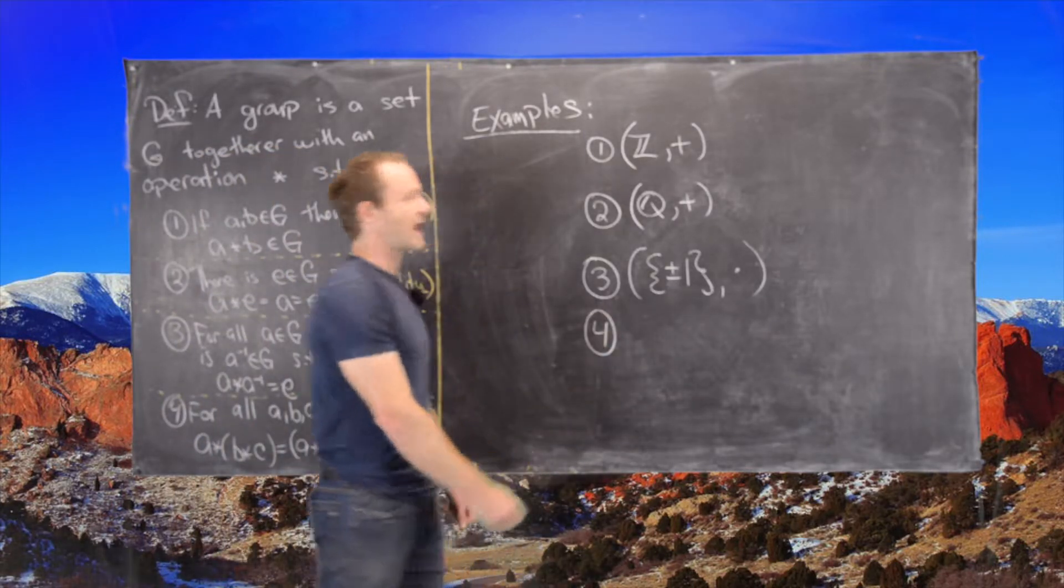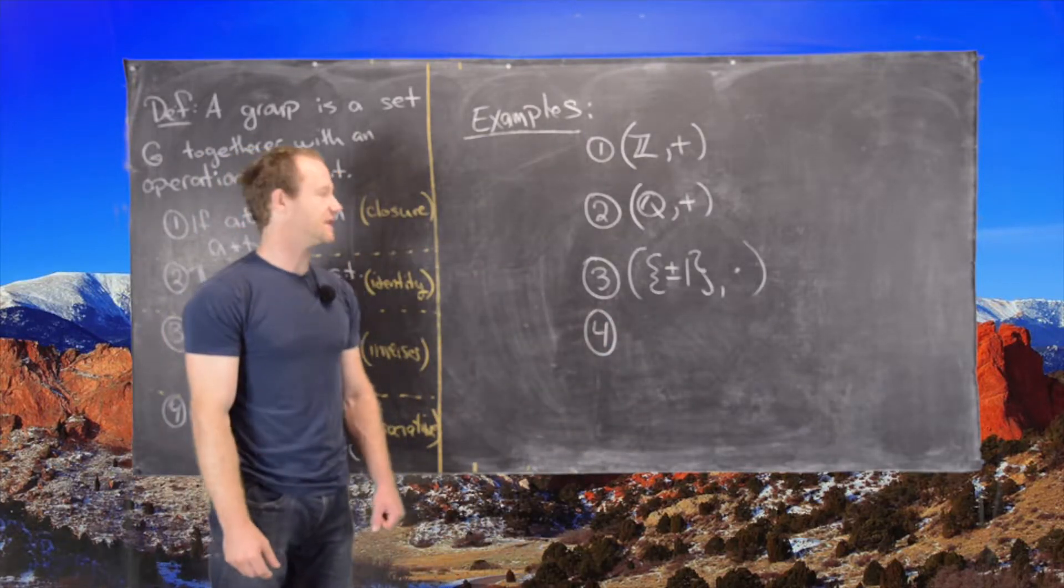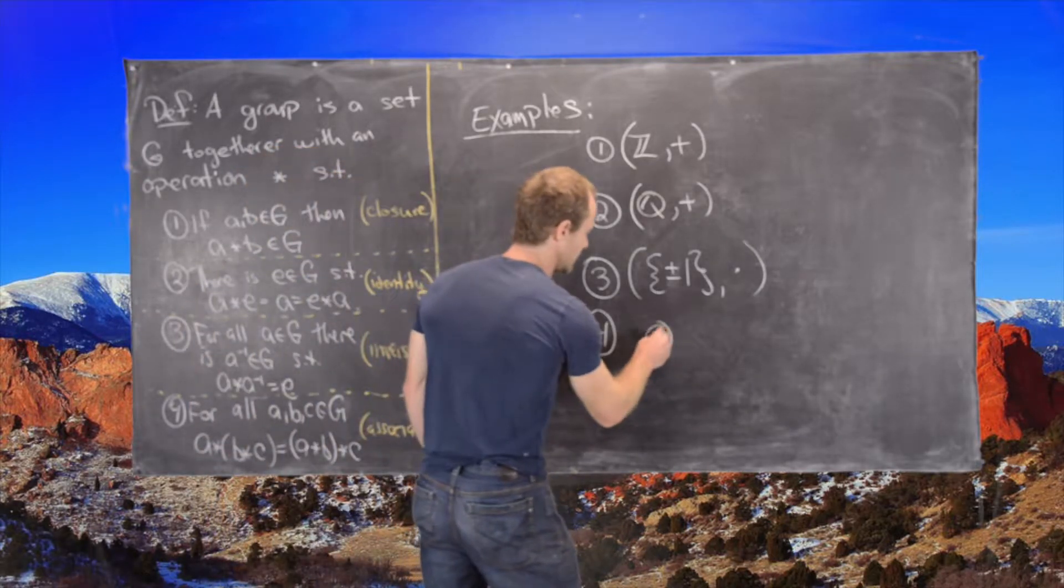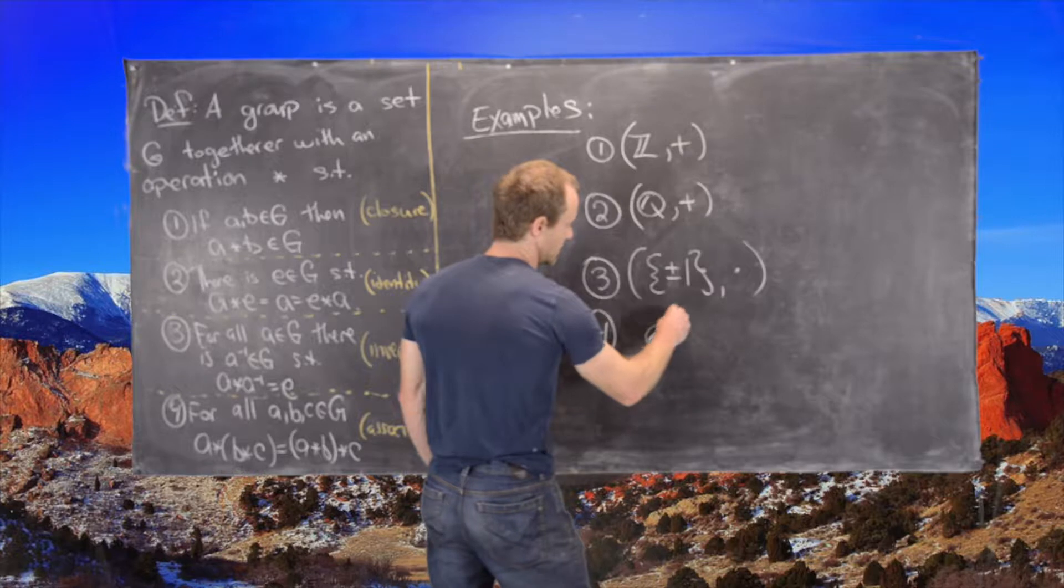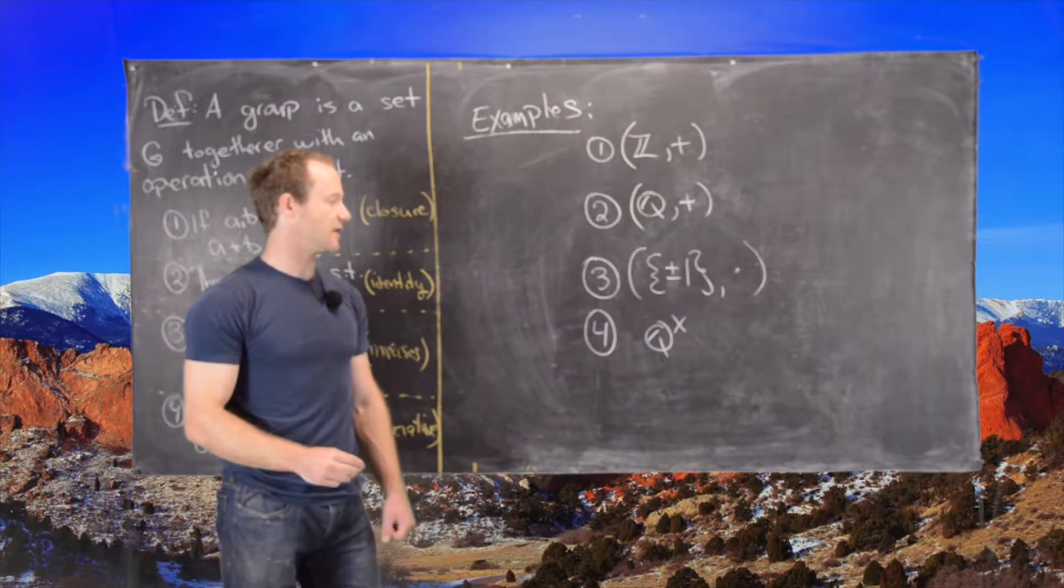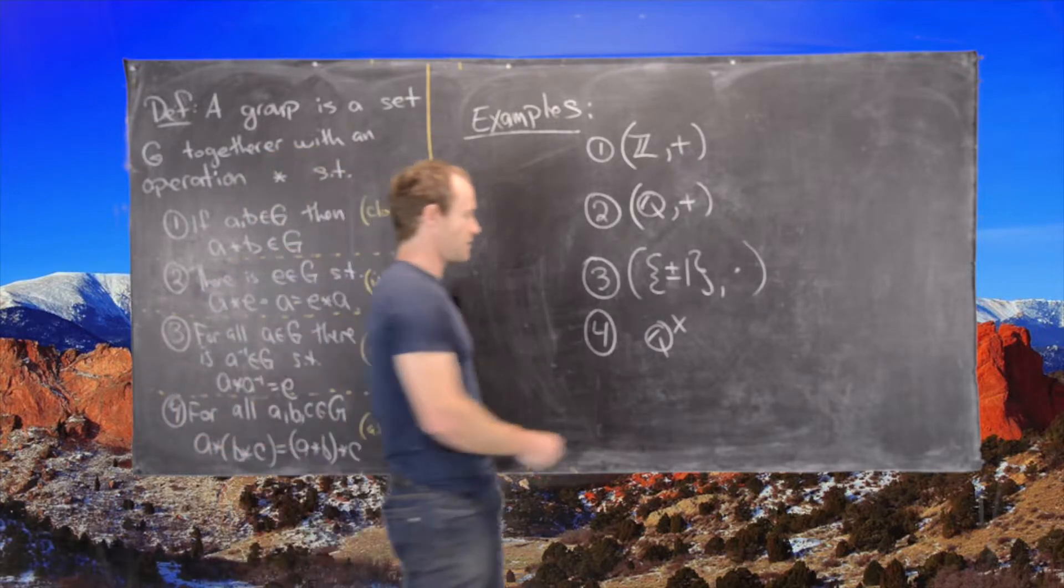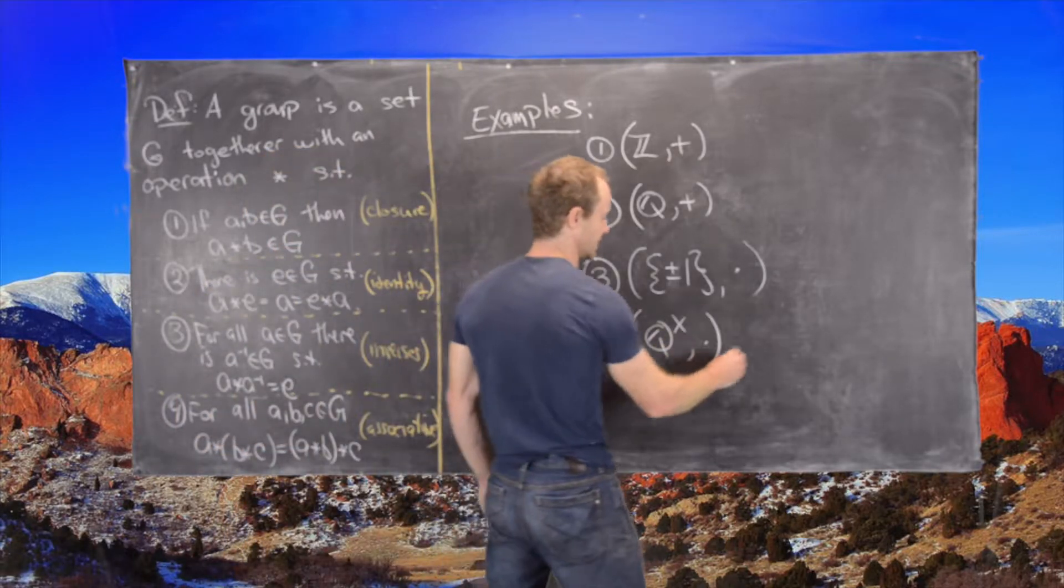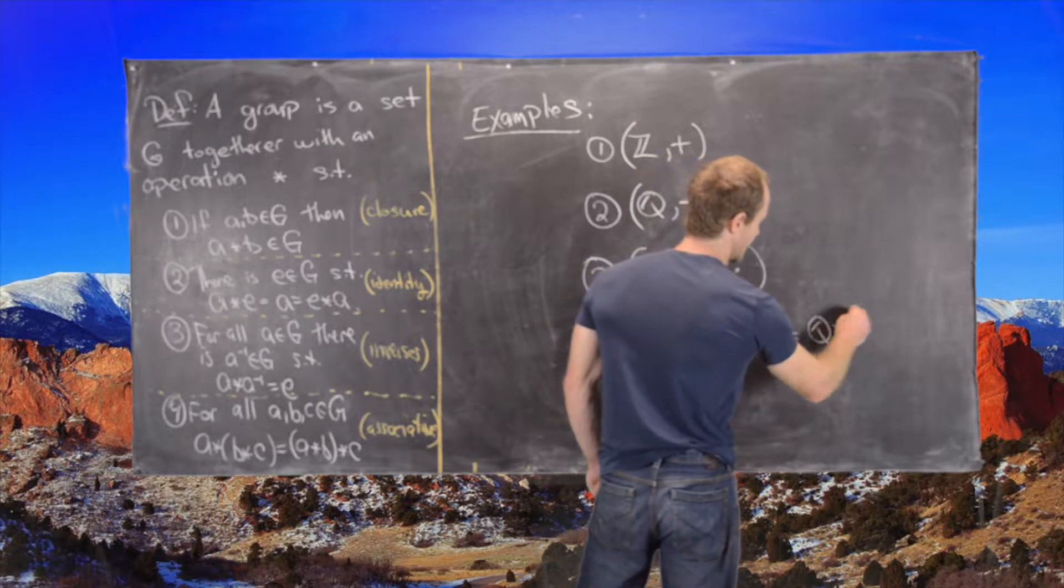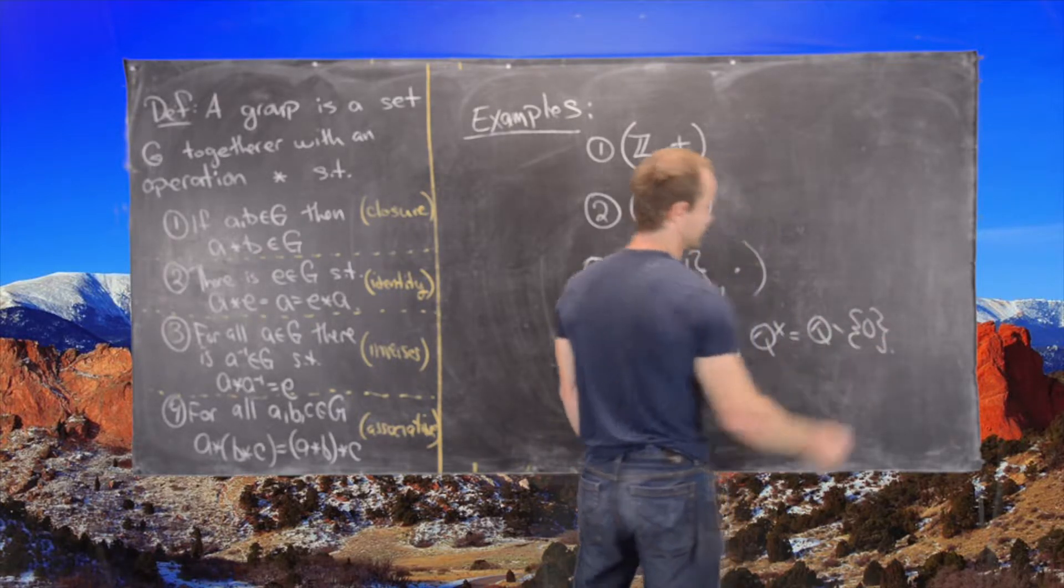And then what about the rational numbers? Well, everything has an inverse except for zero. So we could say Q with a times up there, and that means that we are deleting zero, and then with multiplication. This is Q minus zero.